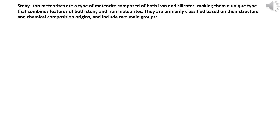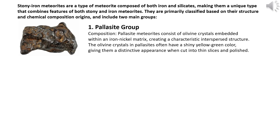Stony-iron meteorites are a type of meteorite composed of both iron and silicates, making them a unique type that combines features of both stony and iron meteorites. They are primarily classified based on their structure and chemical composition origins and include two main groups. (1) Pallasite group: pallasite meteorites consist of olivine crystals embedded within an iron-nickel matrix, creating a characteristic interspersed structure. The olivine crystals in pallasites often have a shiny yellow-green colour, giving them a distinctive appearance when cut into thin slices and polished.